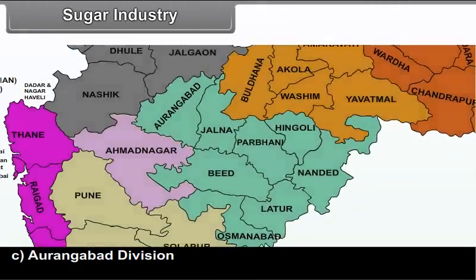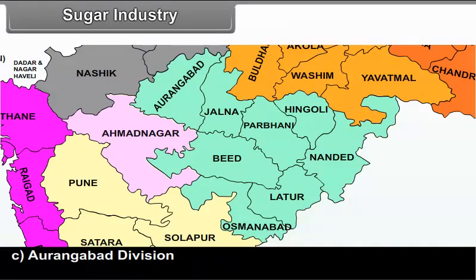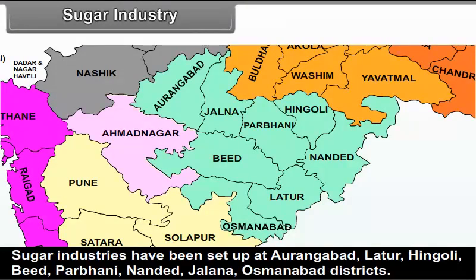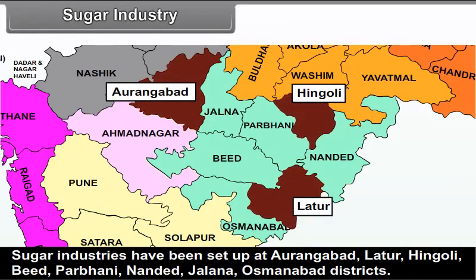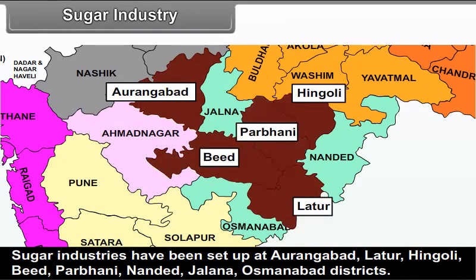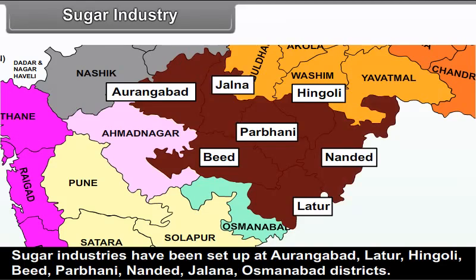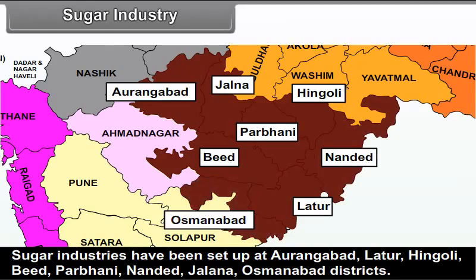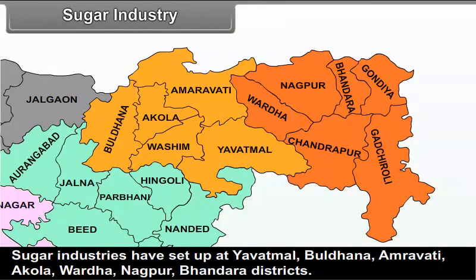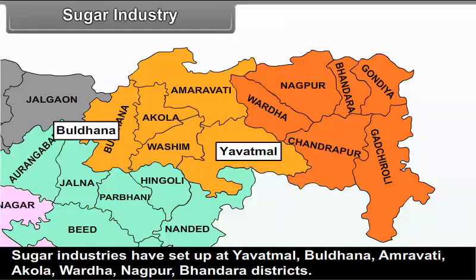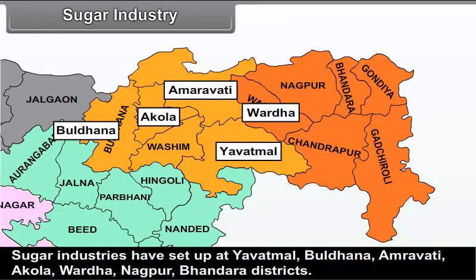In Aurangabad division, sugar industries have been set up at Aurangabad, Latur, Hingoli, Beed, Parbhani, Nanded, Jalna and Osmanabad districts. In Nagpur-Amravati division, sugar industries have been set up at Yavatmal, Buldana, Amravati, Akola, Wardha, Nagpur and Bhandara districts.